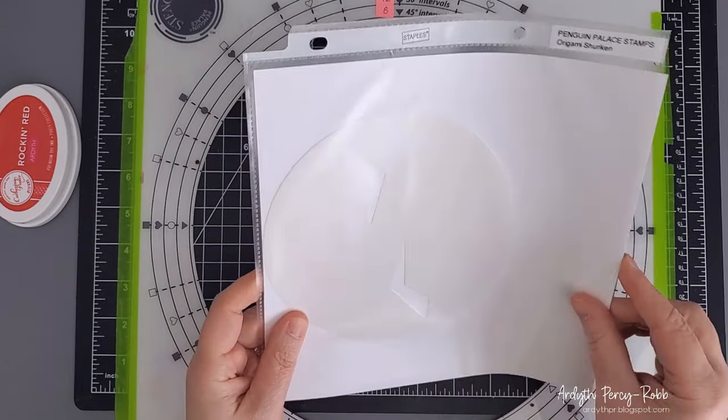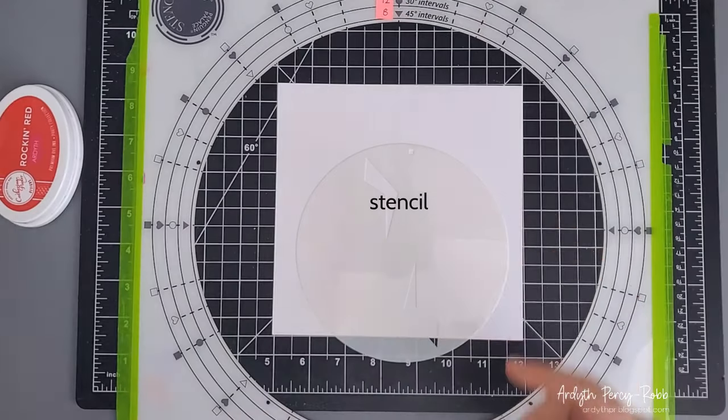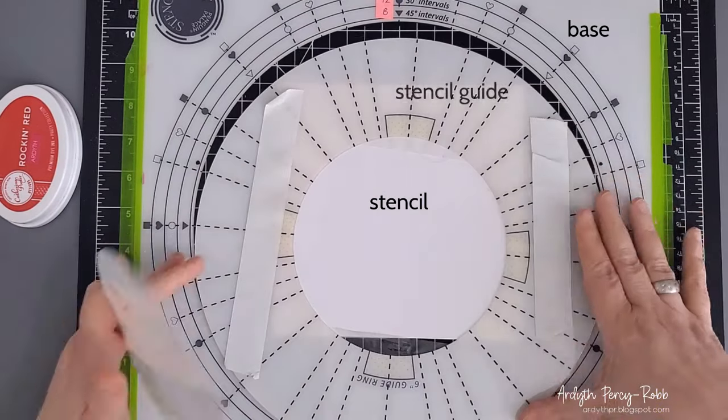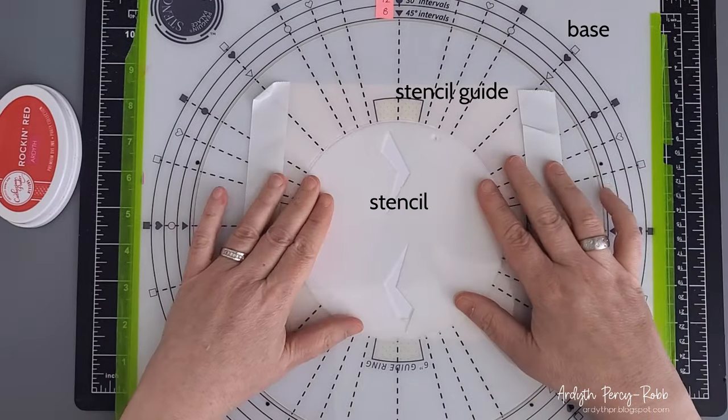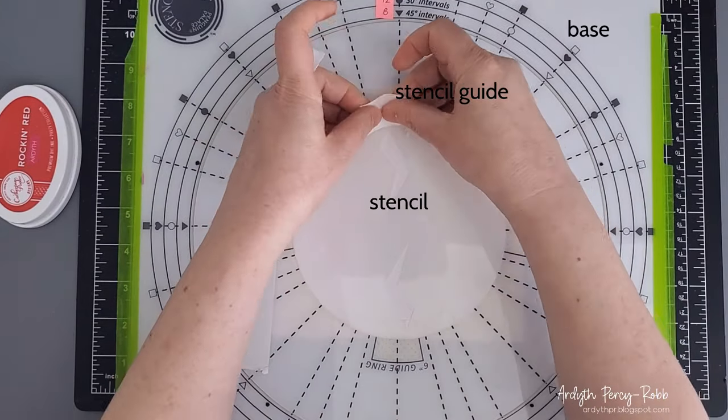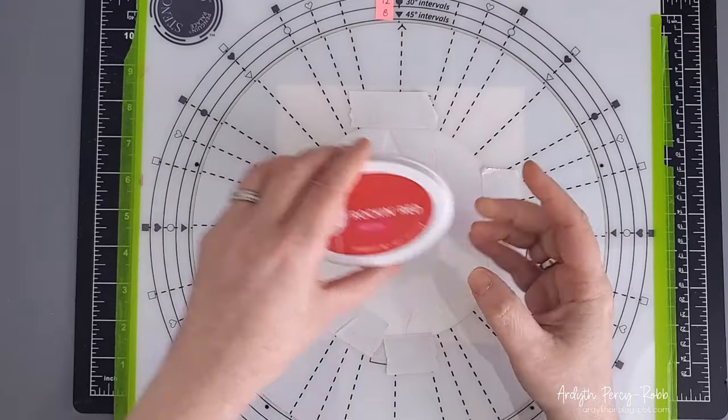I'm using this origami shuriken stencil. These stencils are round, and I place the stencil into the stencil guide and hold it in place with some post-it tape. I want to cover over the little square hole in the edges where I'll be blending ink so I don't get any between the guide and the stencil.